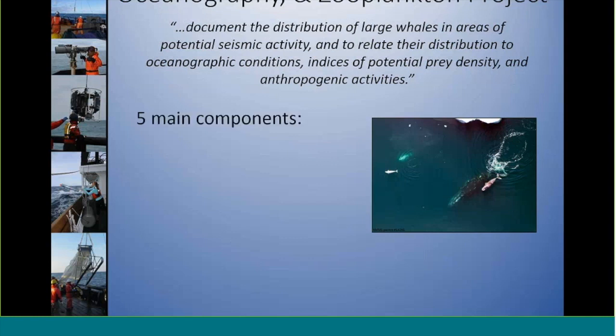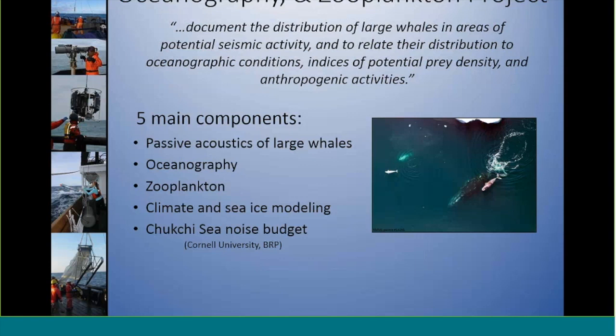There are five main components to CHAOS, as the name implies. The first three are passive acoustics, oceanography, and zooplankton. But we also had a climate and sea ice modeling component, as well as a Chukchi noise budget component. This talk today is going to focus on these first three. This is really one small aspect of this project, so if you have any questions on any of the other components or any other results, please feel free to get in touch with us afterwards.